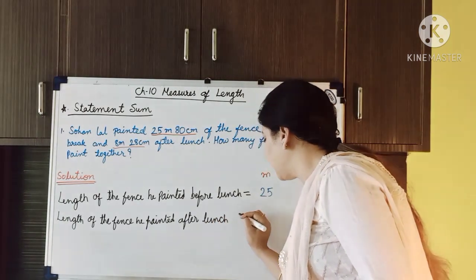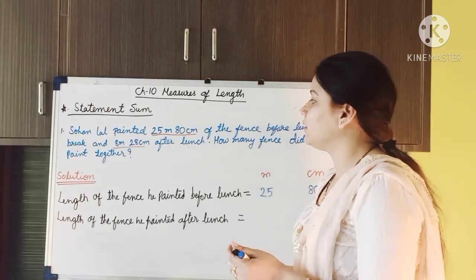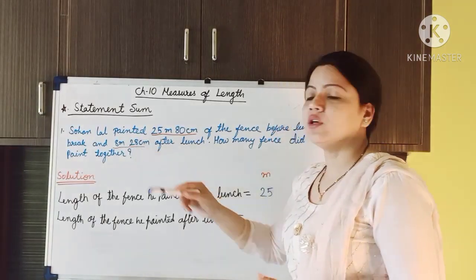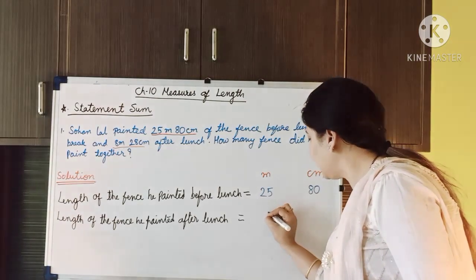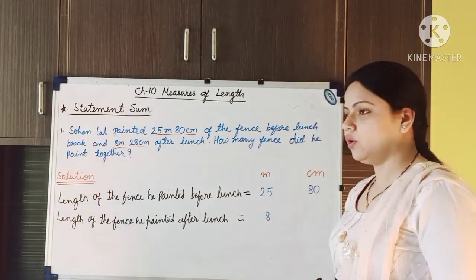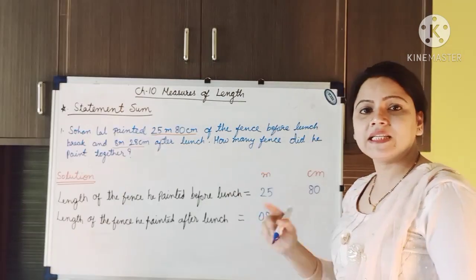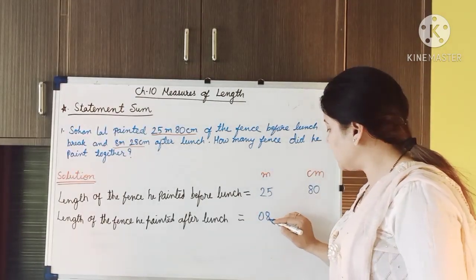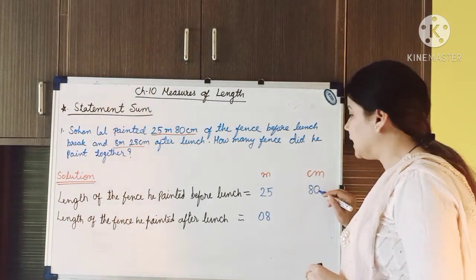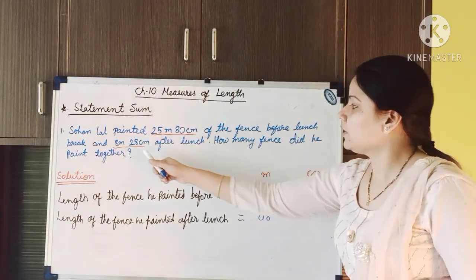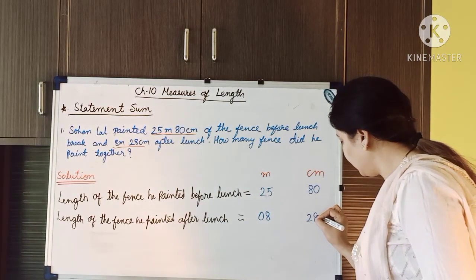Now we have to write the second statement: length of the fence he painted after lunch. After lunch how much length has he painted? He painted 8 meter and 28 centimeter. So under the column of meter we will write 8 meter, and we have to give 0 because 8 is a one-digit number. Here in centimeter we have to write 28.